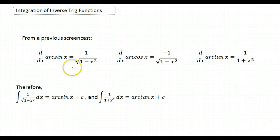Remember from a previous screencast that the derivative of the arc sine of x is 1 over the square root of 1 minus x squared. The derivative of arc cosine is just the negative of that same expression, and the derivative of inverse tan is 1 over 1 plus x squared.